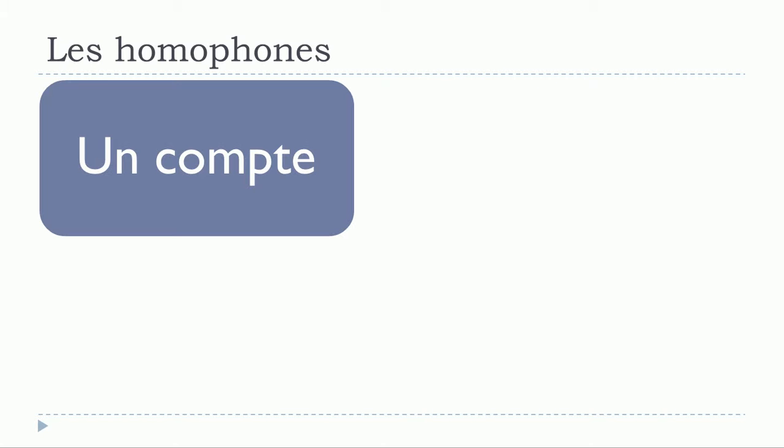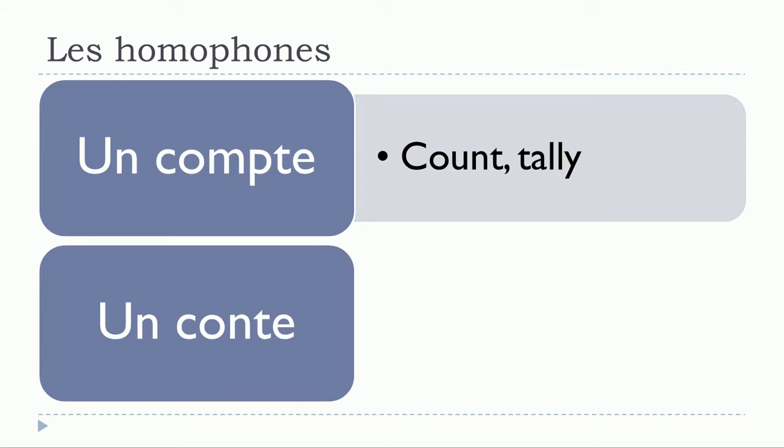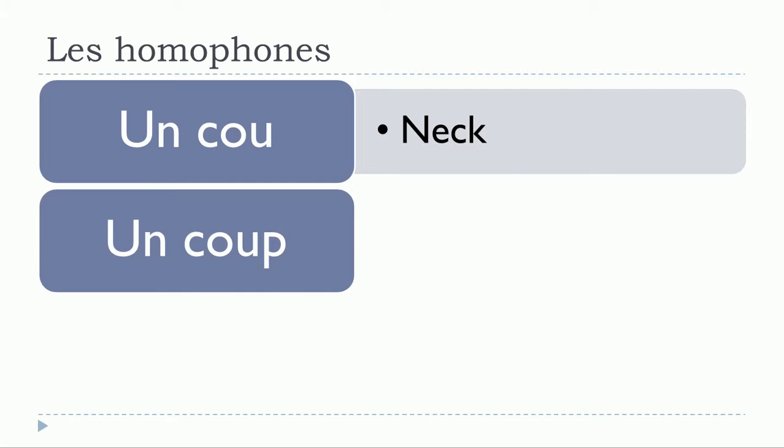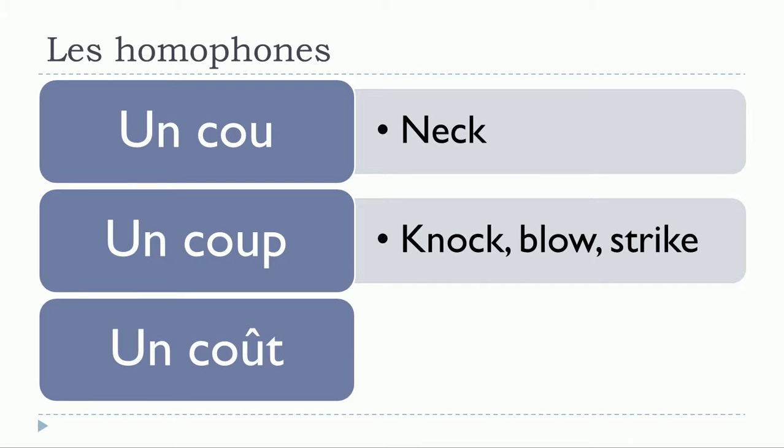The first one is un conte, un compte. So exactly the same pronunciation but the meaning is different. Un conte, un comte, un coup, and then un coût. You can see that you get this final P here but then you don't pronounce it. Remember, accent circonflexe you don't pronounce it. Final T, same thing, you don't pronounce it.